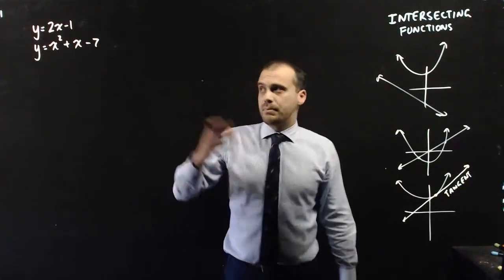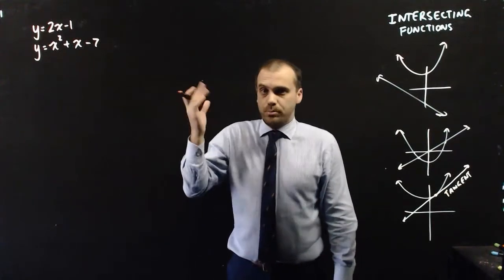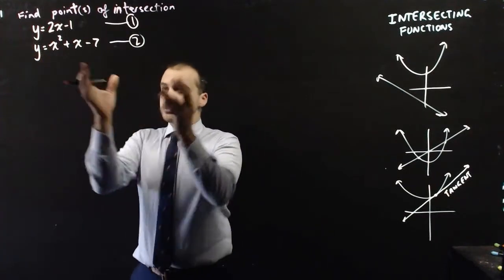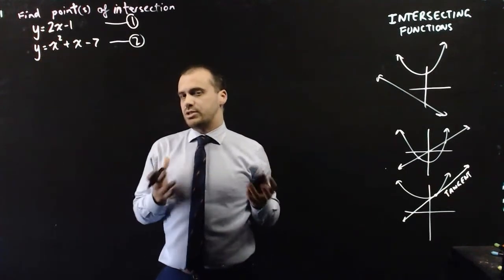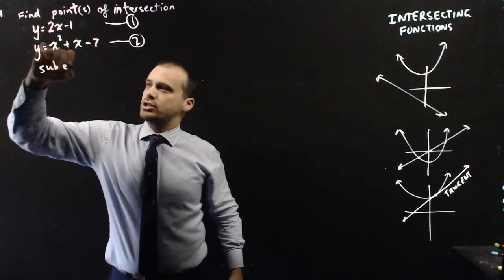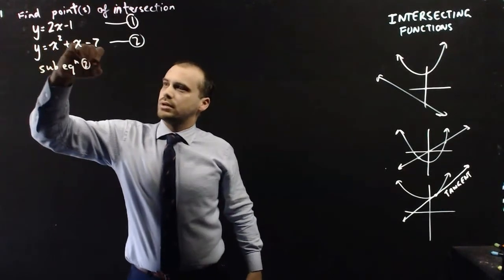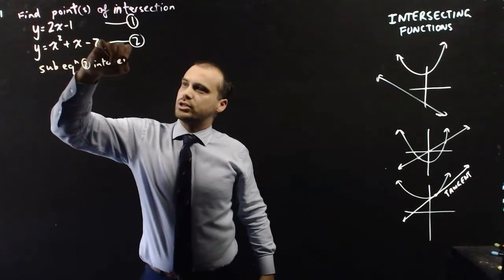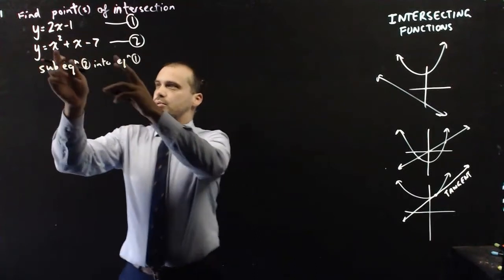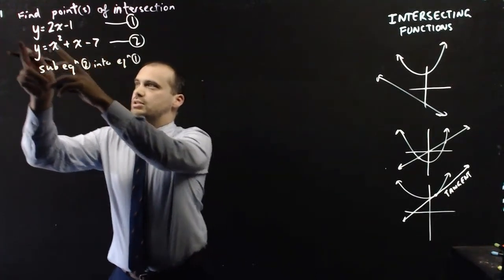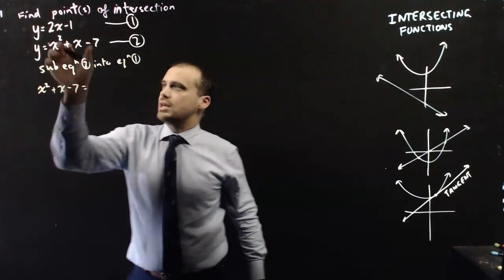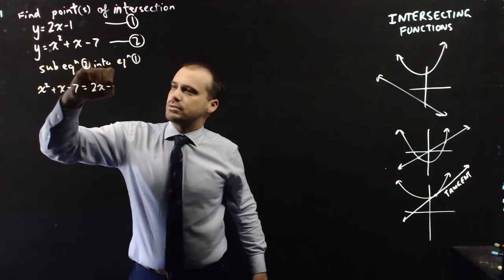We don't know which of these is going to happen yet, but let's find the points of intersection between these two. We've got simultaneous equations, so we just do what we've done before — we're going to use substitution. We sub equation 2 into equation 1, and since they're both written as y equals something, we get: x squared plus x minus 7 equals 2x minus 1.